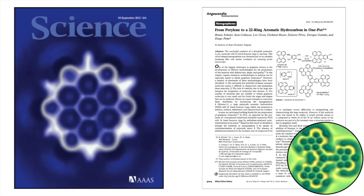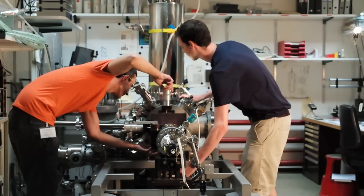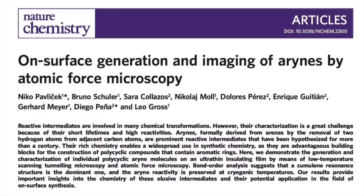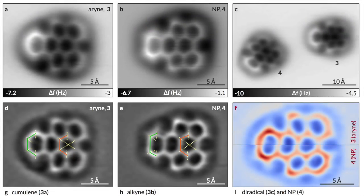After successfully collaborating in 2014 to image nanografenes, Professor Pena and his colleagues connected again with IBM physicists in Zurich to image arines using scanning tunneling and atomic force microscopy. The result is a new paper appearing today in Nature Chemistry, which details how they successfully generated and imaged arine for the first time.